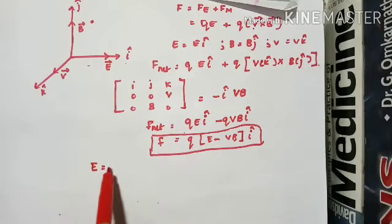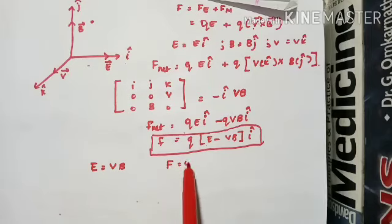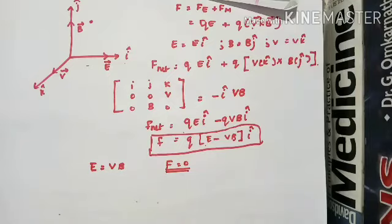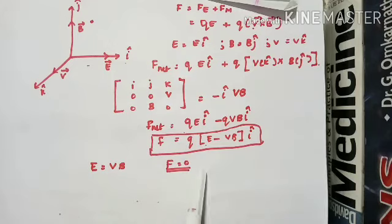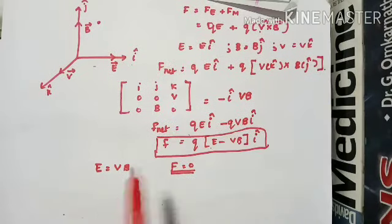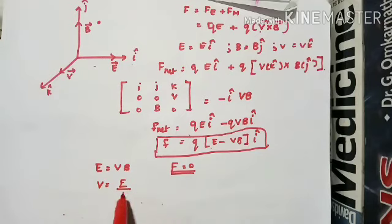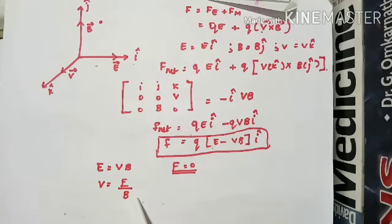What happens when E = VB? In the equation F_net = Q(E − VB)î, if E = VB, then F = 0. So there is a condition when the force can be zero — a charge placed in both electric and magnetic field can experience no force at all. Rearranging, V = E/B. There can be a condition when a charge in crossed electric and magnetic fields experiences no net force when its velocity equals the ratio E/B.